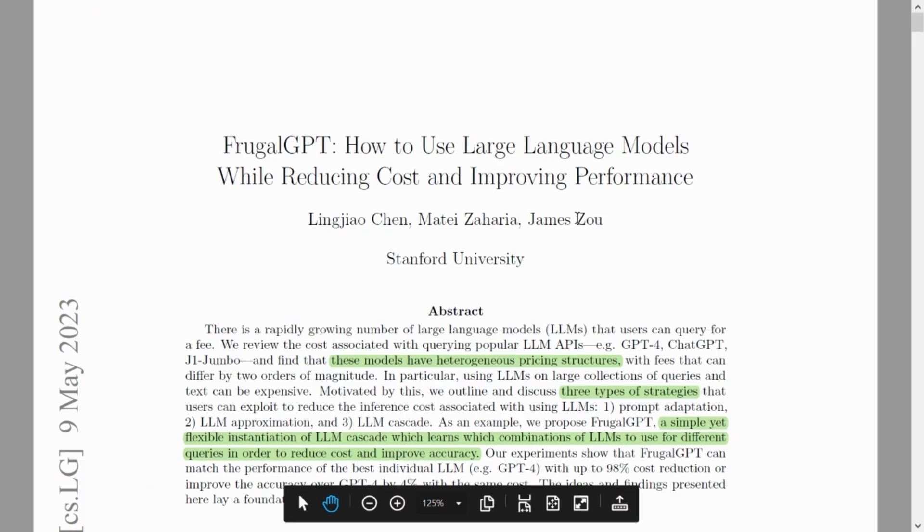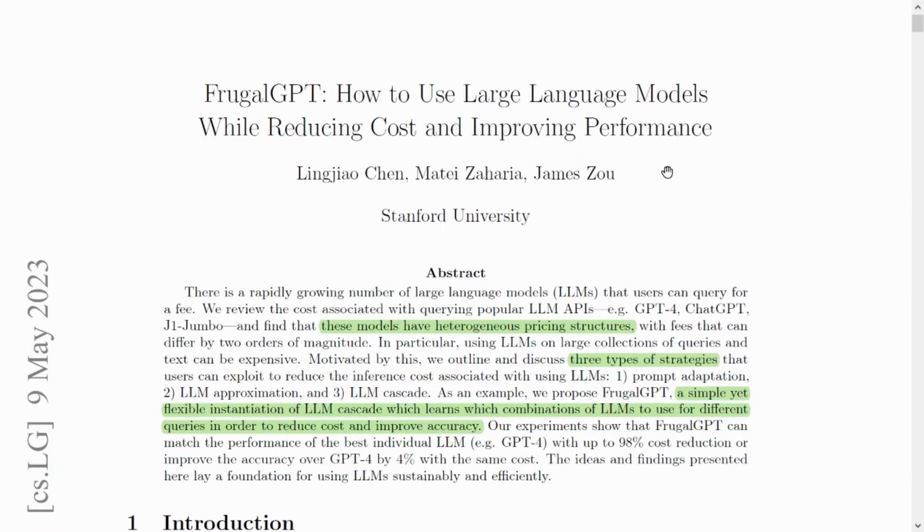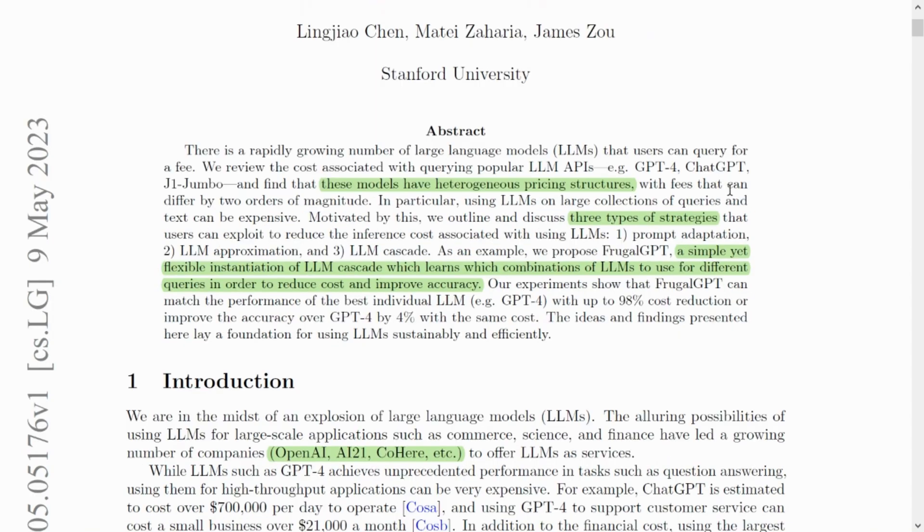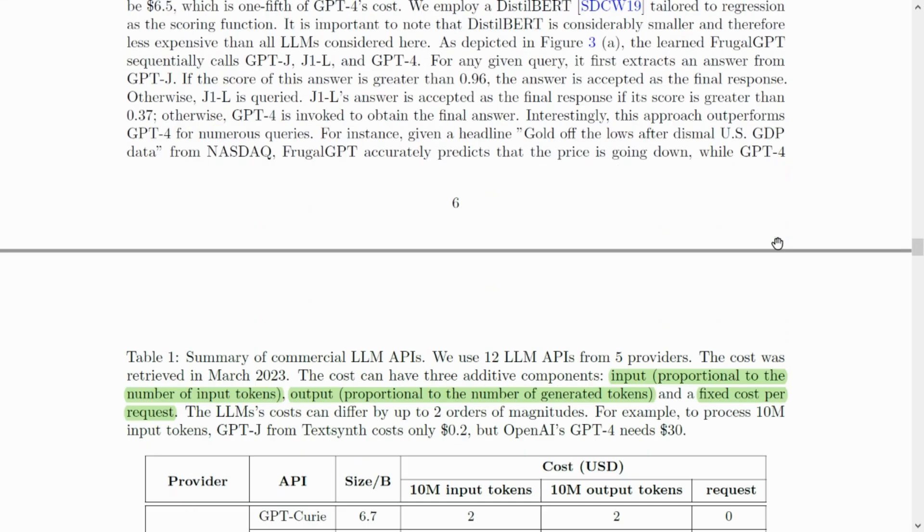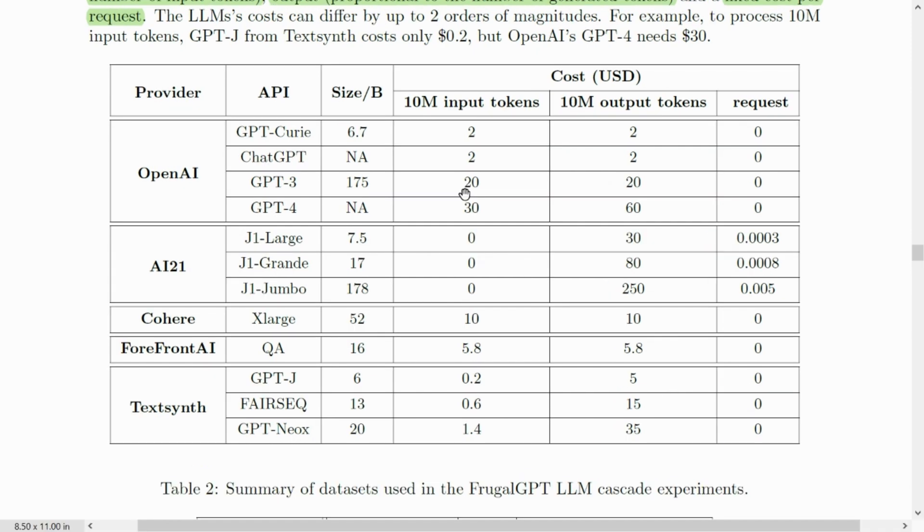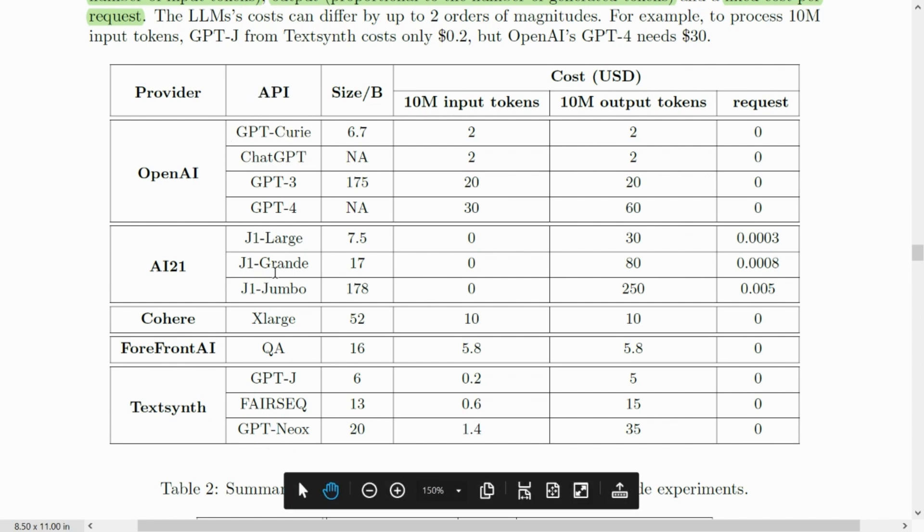Let's get started with this paper. This is a paper from Stanford University titled FrugalGPT: How to Use Language Models While Reducing Cost and Improving Performance. Now with the advent and introduction of large language models, it is very evident that we have different pricing structures for different models. For example, in this table, we see five providers, service providers or LLM providers, and there are 12 APIs which have been studied.